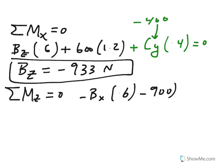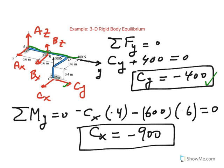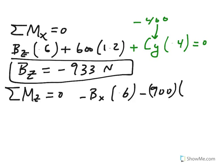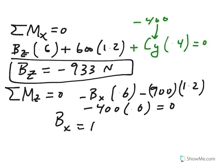The 900 is the one that we calculated earlier. That was the C sub X minus 900 times 1.2. And then finally minus 400 times 0.6. So if we go ahead and solve for B sub X, B sub X happens to be equal to 1400 newtons.